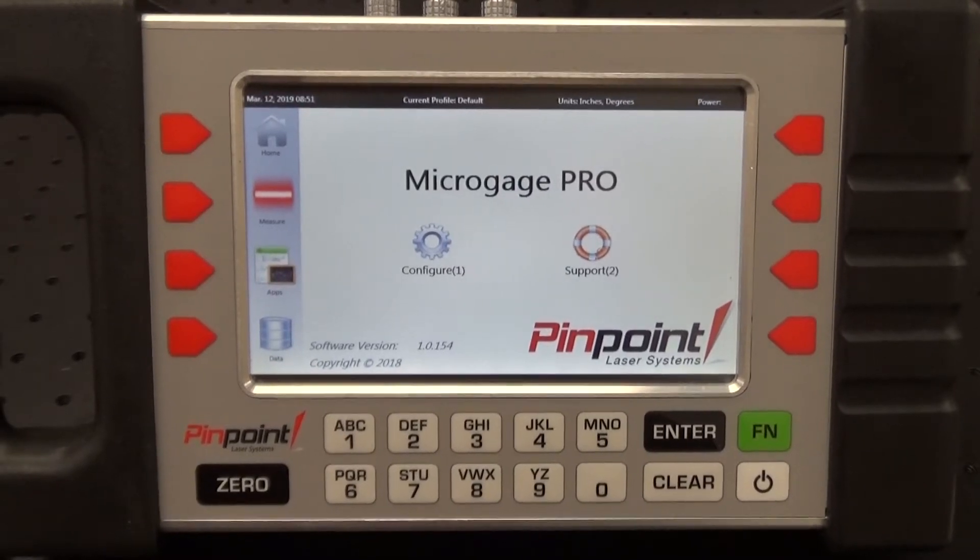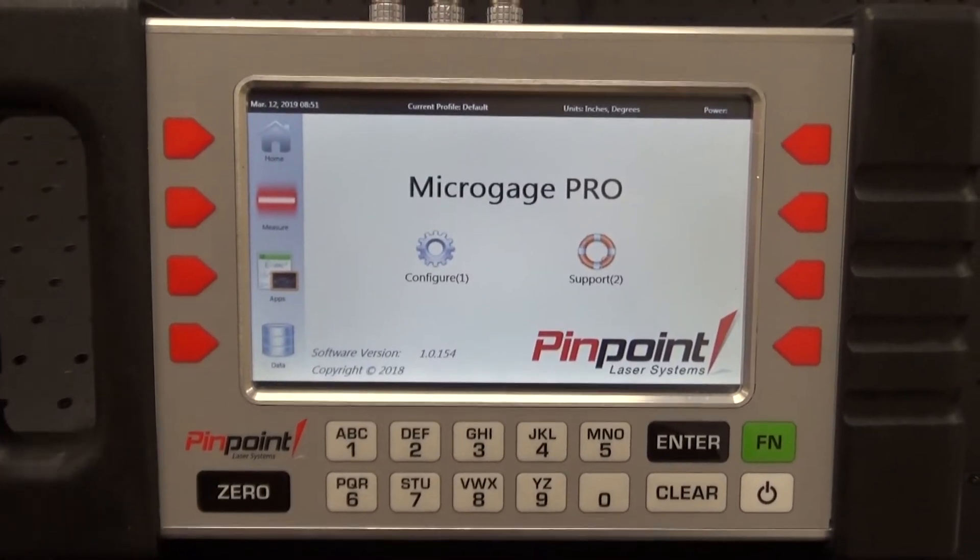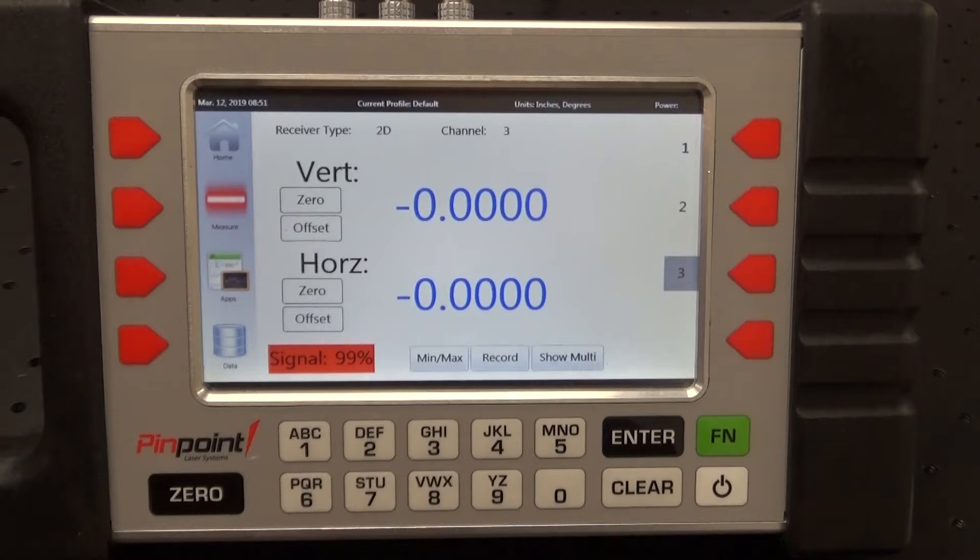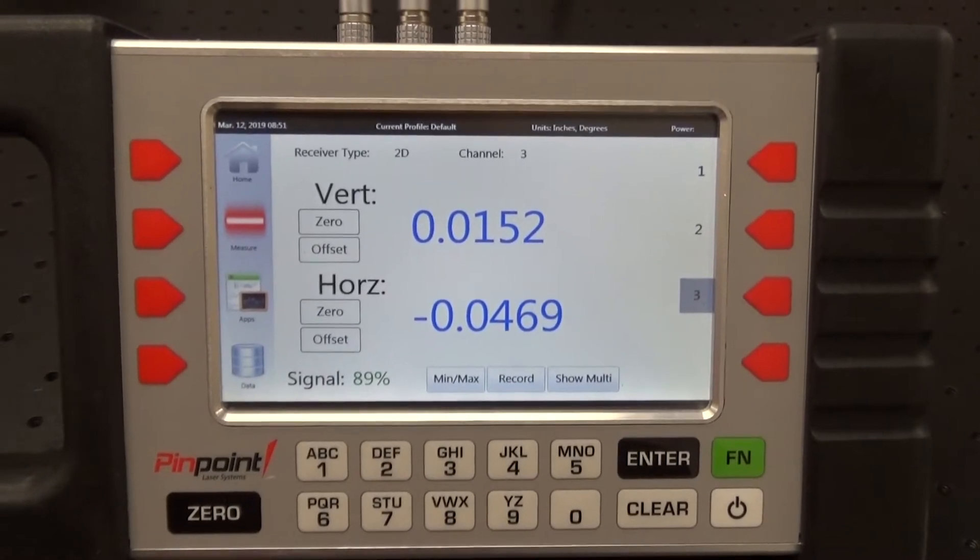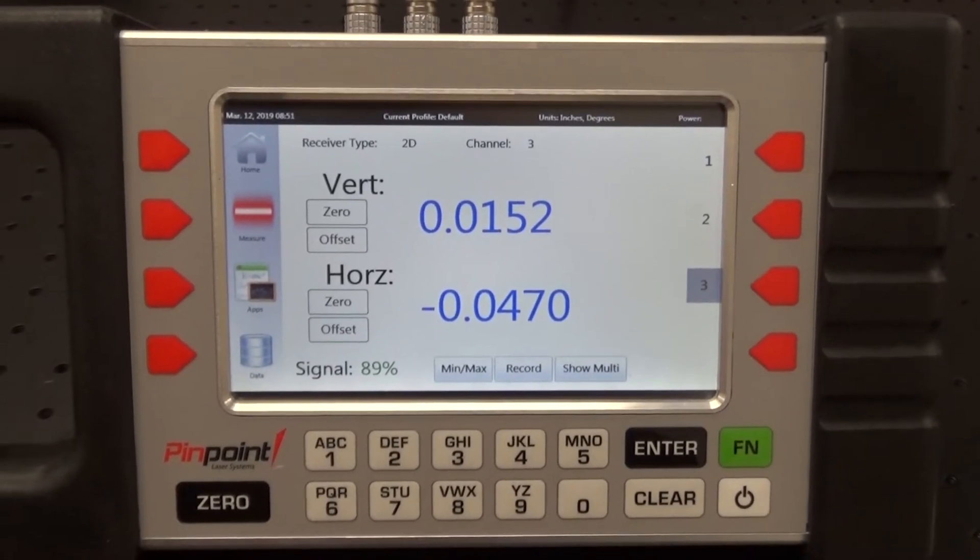The Pro display has a color touch screen and shows the measurements obtained by the receiver in real time. Measurements can be recorded directly to the display or it can be attached to a PC to record measurements into Pinpoint Capture software.